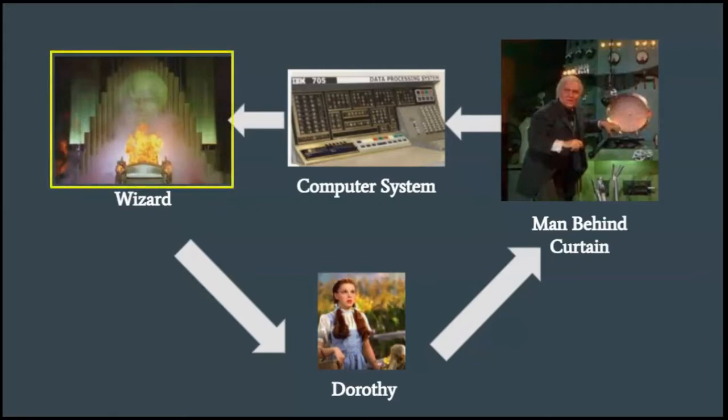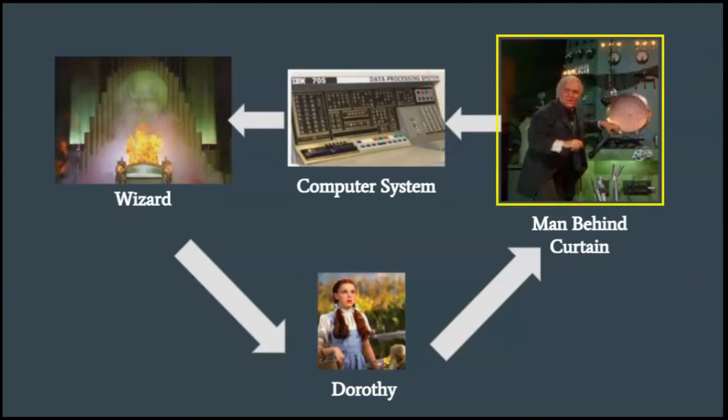Well, you first have the hologram of the wizard's head. Then you have Dorothy who sees the hologram. When Dorothy speaks, she thinks she's speaking to the large wizard head, but her voice is actually being heard by the man behind the curtain. That man then enters data into a computer system that stores information and makes the wizard hologram move.